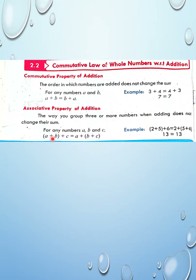Using the BODMAS rule, we first solve the bracket. When the bracket's answer comes, we add it with C. The answer on the left-hand side will equal the right-hand side. If we change the bracket's position — first A plus B in bracket, then B plus C in bracket — changing the bracket placement does not affect the answer.